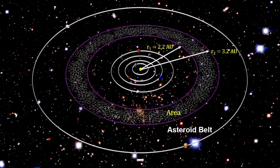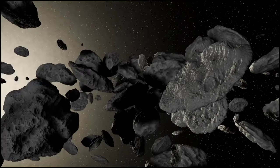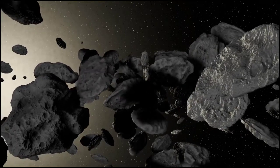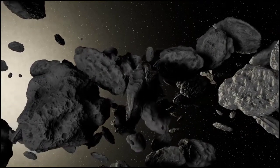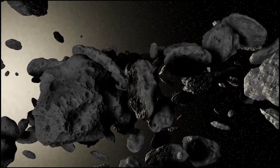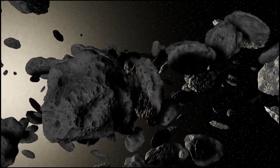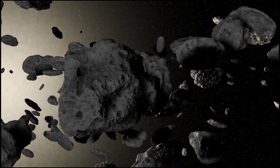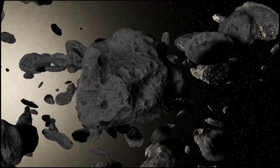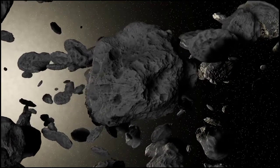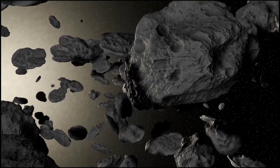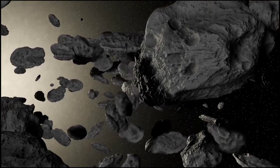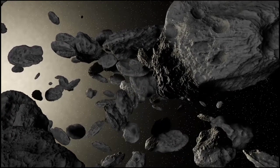Generally in relatively low eccentricity orbits, this belt is now estimated to contain between 1.1 and 1.9 million asteroids larger than 1 kilometer in diameter, and millions of smaller ones. These asteroids may be remnants of the proto-planetary disk, and in this region the accretion of planetesimals into planets during the formative period of the solar system was prevented by large gravitational perturbations by Jupiter.